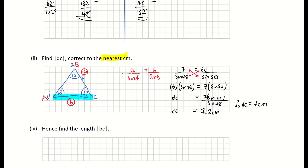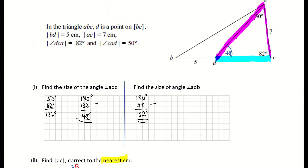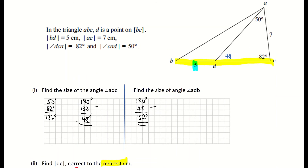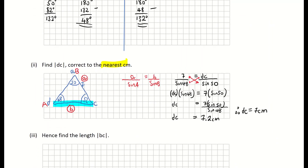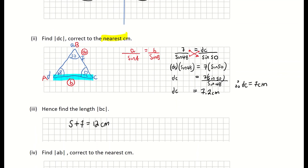Part three asks for the length of side BC — the full length of the base of the shape. We know part of it is 5 centimeters and we've just found DC to be 7 centimeters. So the full length BC is simply 5 plus 7, which equals 12 centimeters.